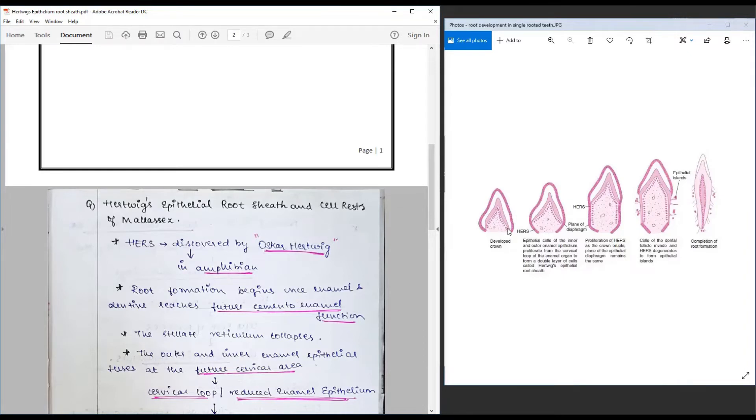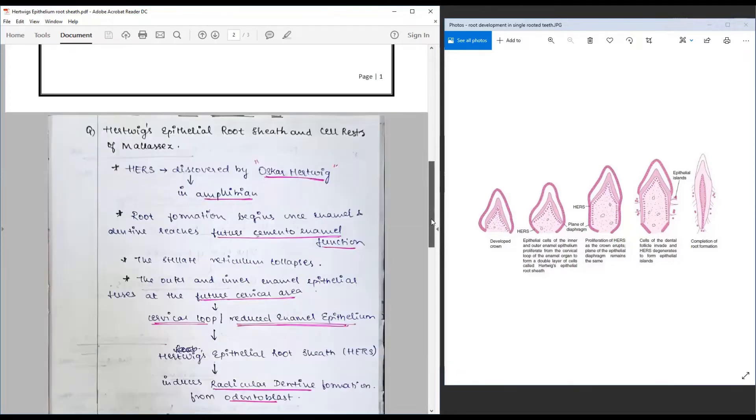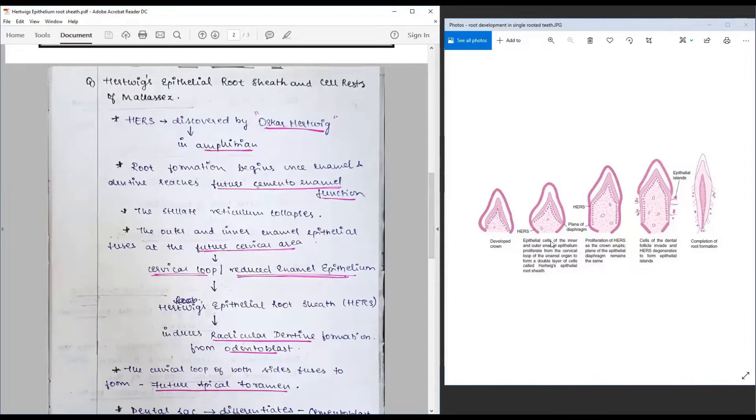As the inner enamel epithelium and the outer enamel epithelium comes together, they form along the future cervical area a structure called the reduced enamel epithelium, that is also known as cervical loop.